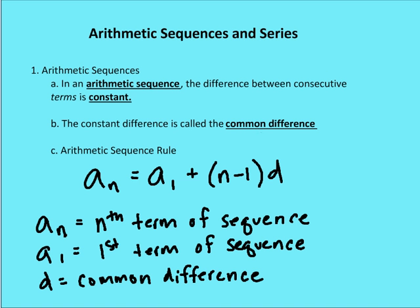So an arithmetic sequence, what defines an arithmetic sequence is that we have a number of terms in which the difference between the terms is constant. So let's think about that for a second.